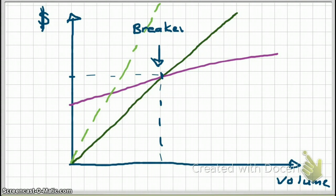Earlier the breakeven point was at this point, but now we have to sell much less units to break even. Conversely, if your selling price had decreased because of pressure from competition, we would have had a much flatter line, and then our breakeven point would have increased, so we would have had to sell more units.